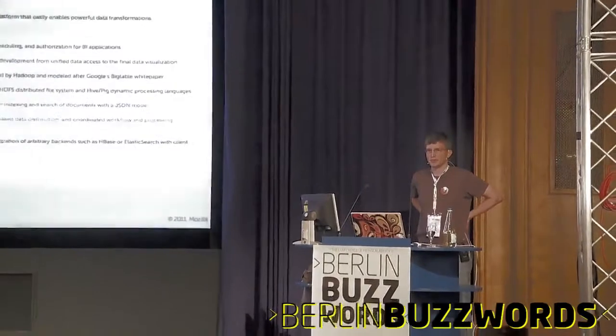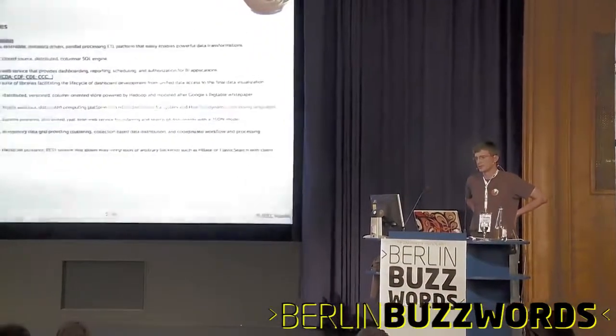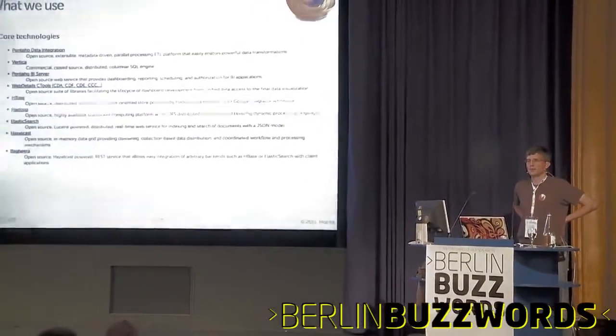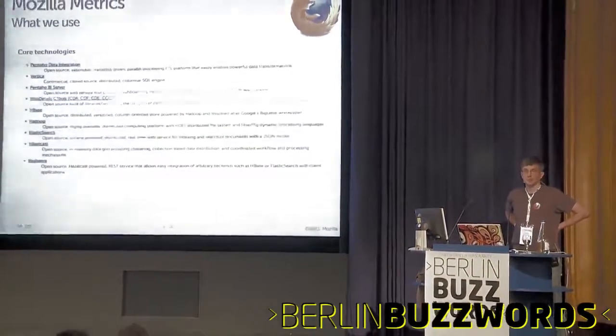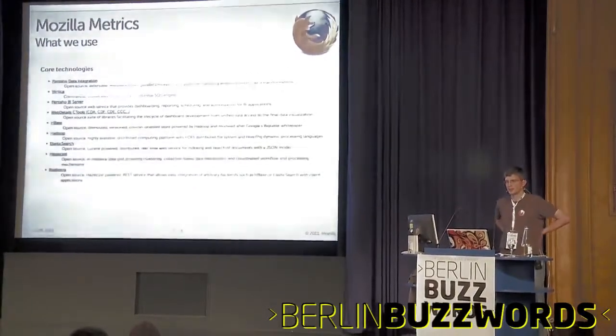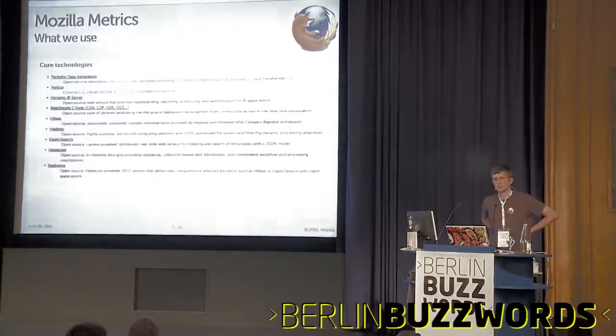Hazelcast is an in-memory data grid. Basically, if you are thinking about a collection — be it a map, a list, or a queue — and you want to deal with this data on more than one machine, Hazelcast is a great library to scale that out. Bagheera is a REST service we built internally. It uses Hazelcast as a management infrastructure and can persist data to whatever backend is needed — HBase and Elasticsearch are two we're currently working with.